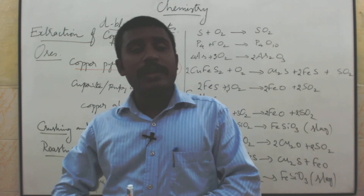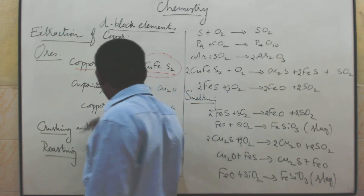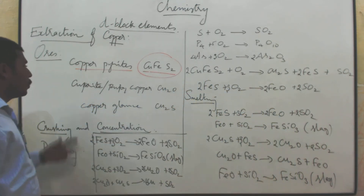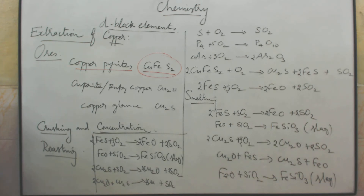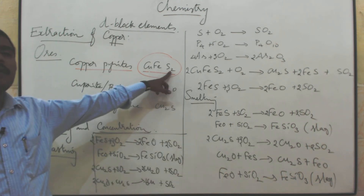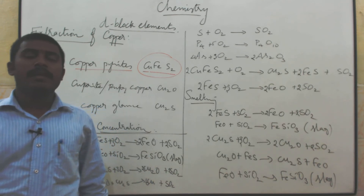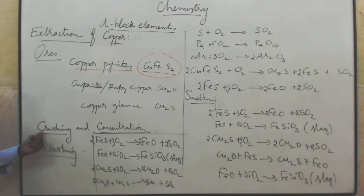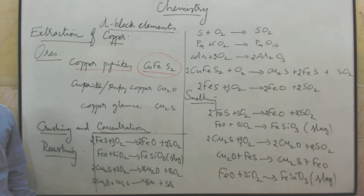To summarize: copper has atomic number 29, symbol Cu, group number 11, period number 4. The ores of copper are copper pyrite (CuFeS₂), cuprite or ruby copper (Cu₂O), and copper glance (Cu₂S). Copper is profitably extracted from its chief ore, copper pyrite. Copper pyrite is a sulphide ore, so the powdered ore is concentrated by the froth flotation process. The next heading is crushing and concentration.